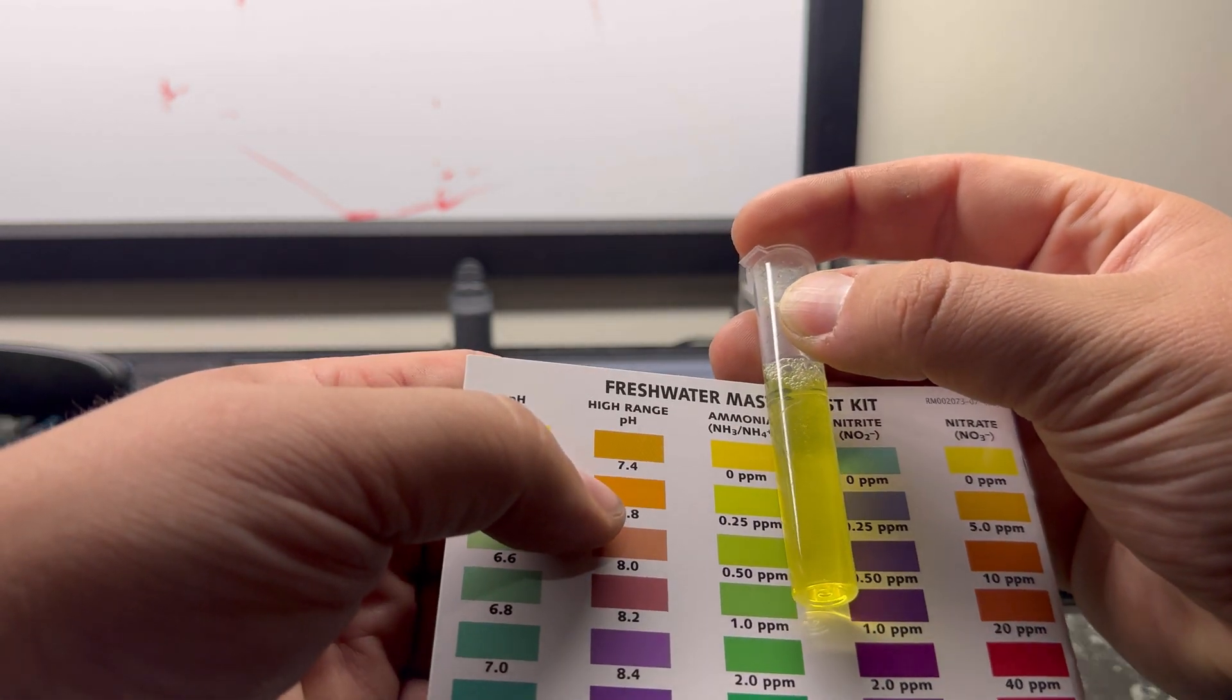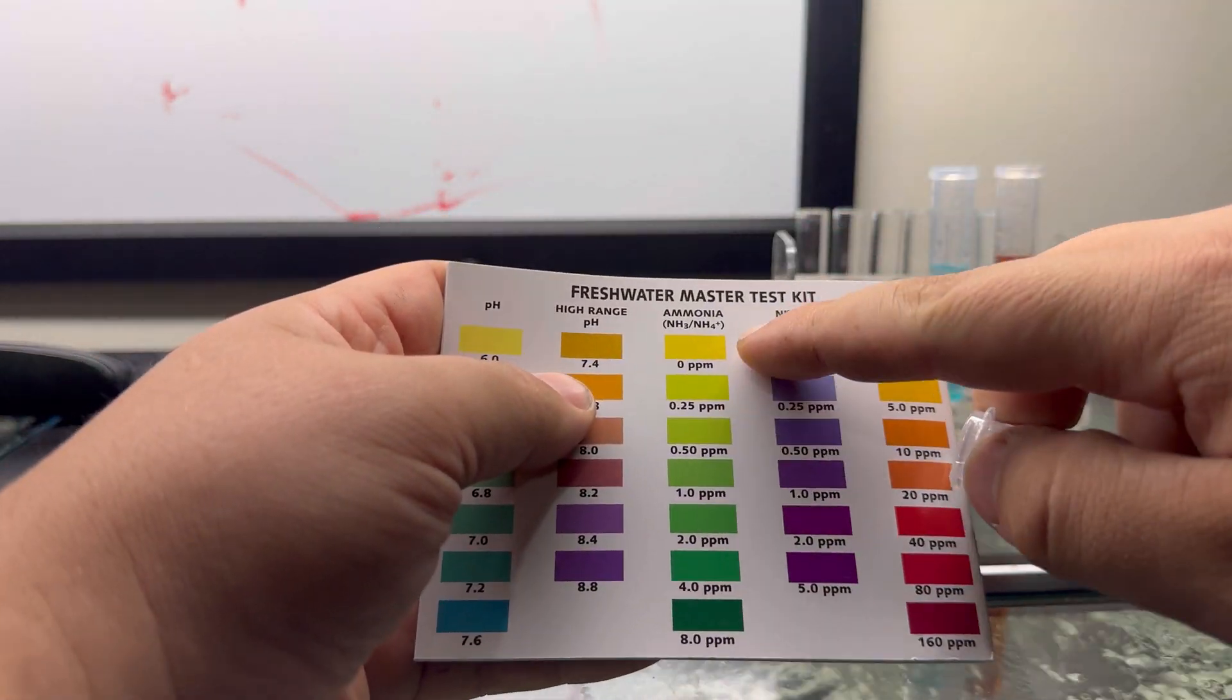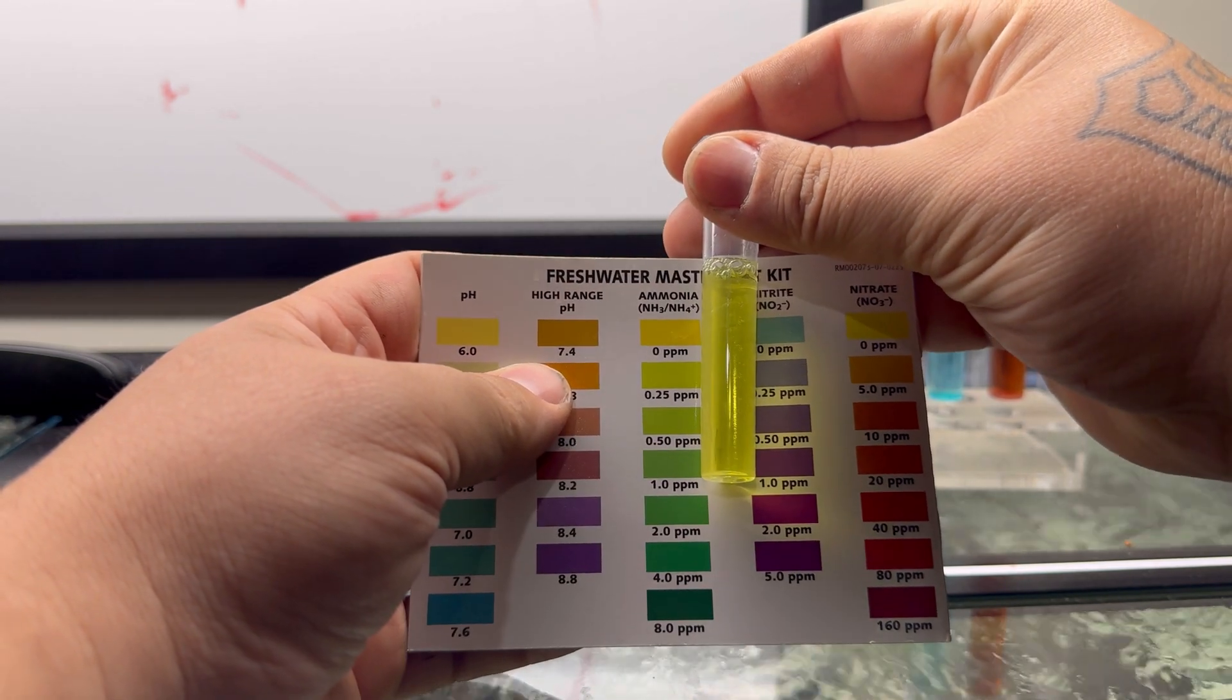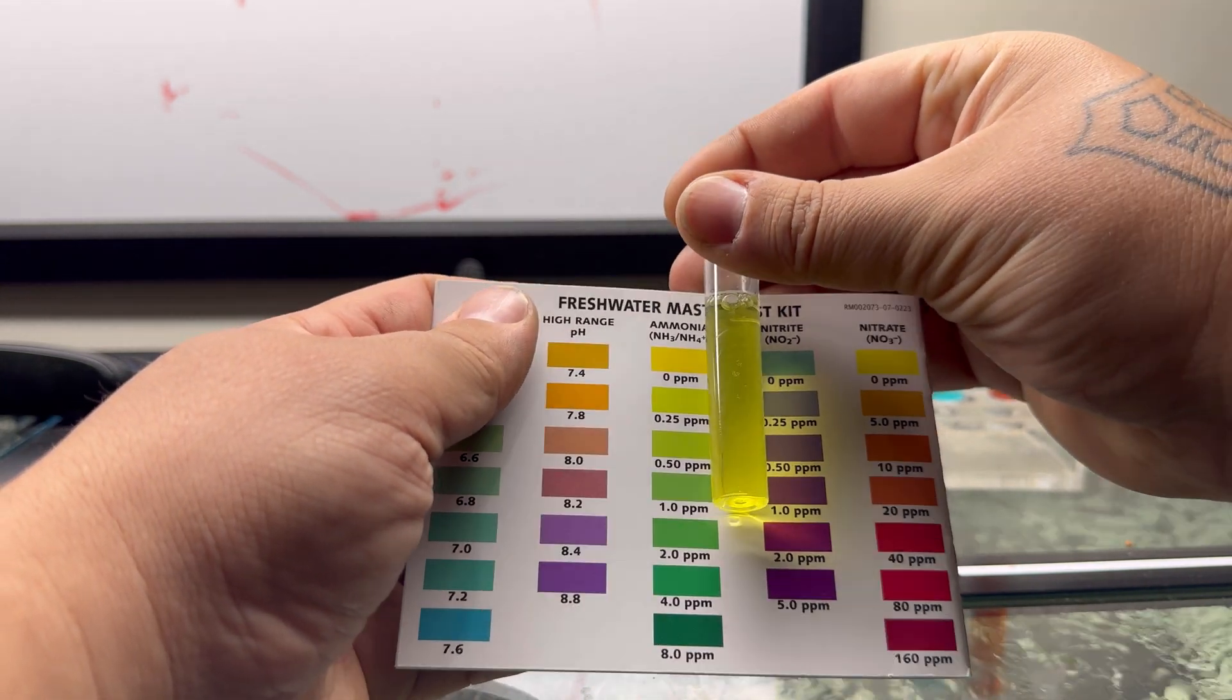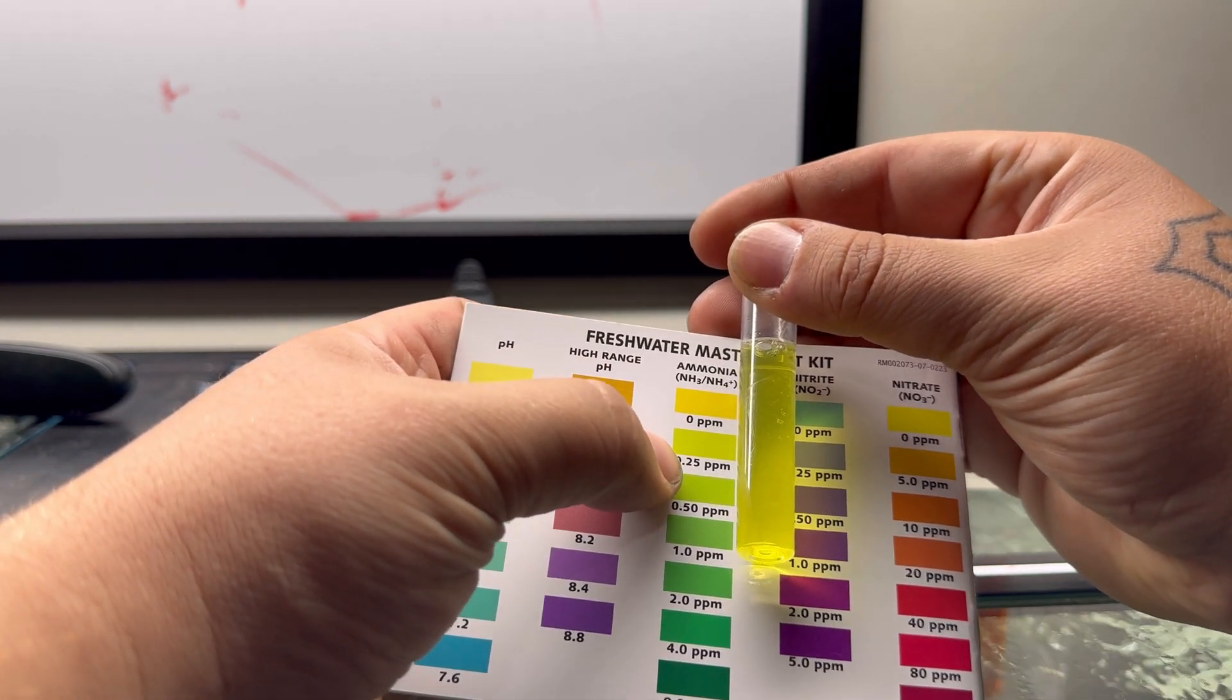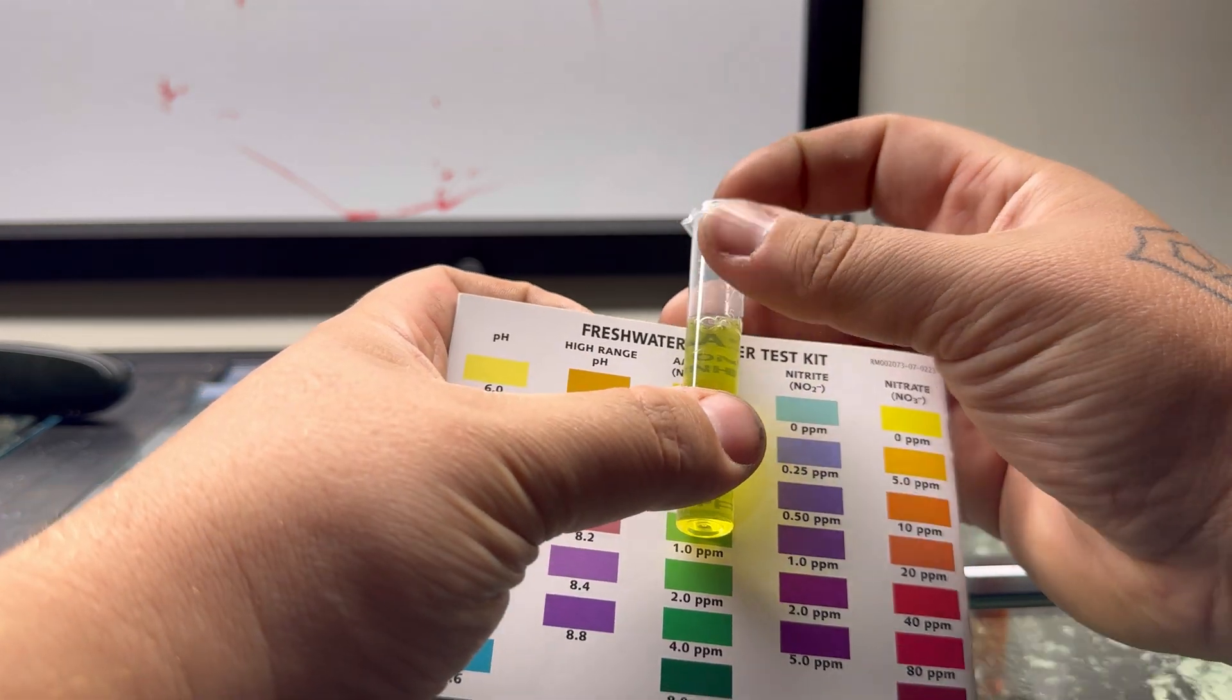We'll start with ammonia. I will state on the video they don't show up very well, but I can assure you that my ammonia is at zero ppm. It does tend to be a little bit green no matter what is going on. Now you're going to want to read these against the white portion of the booklet here. Not to worry, these are waterproof, so you're not going to damage it.